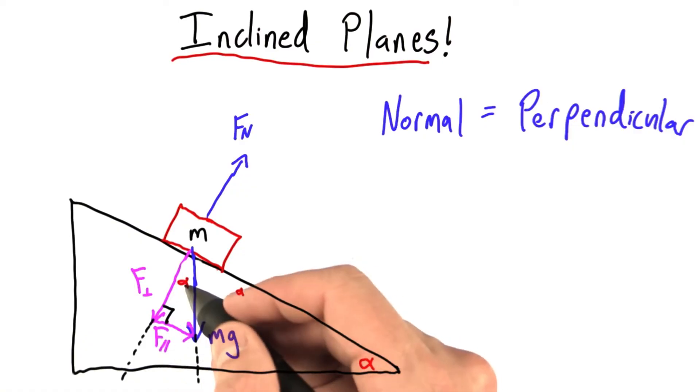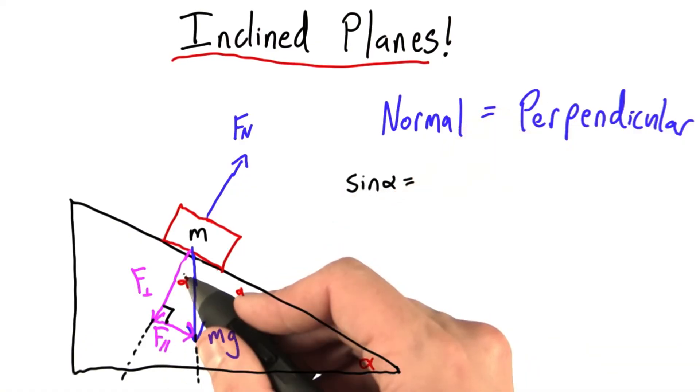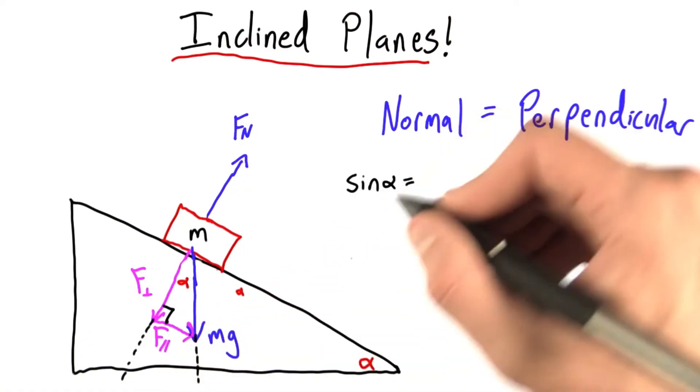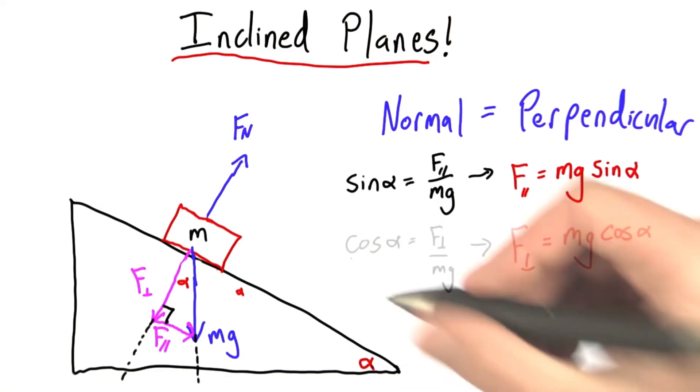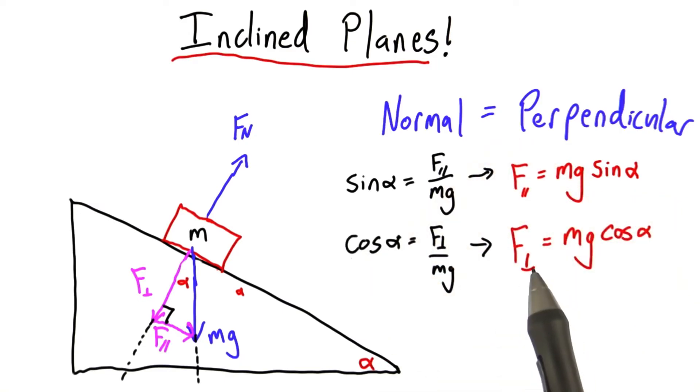we can do trigonometry. In fact, if we want to look at the sine of this angle, for example, well, that's going to equal opposite over adjacent, so f parallel over mg. And when we solve that, we find that f parallel is just mg times the sine of this angle. And we can do similar thinking to show that f perpendicular is mg times the cosine of the angle.